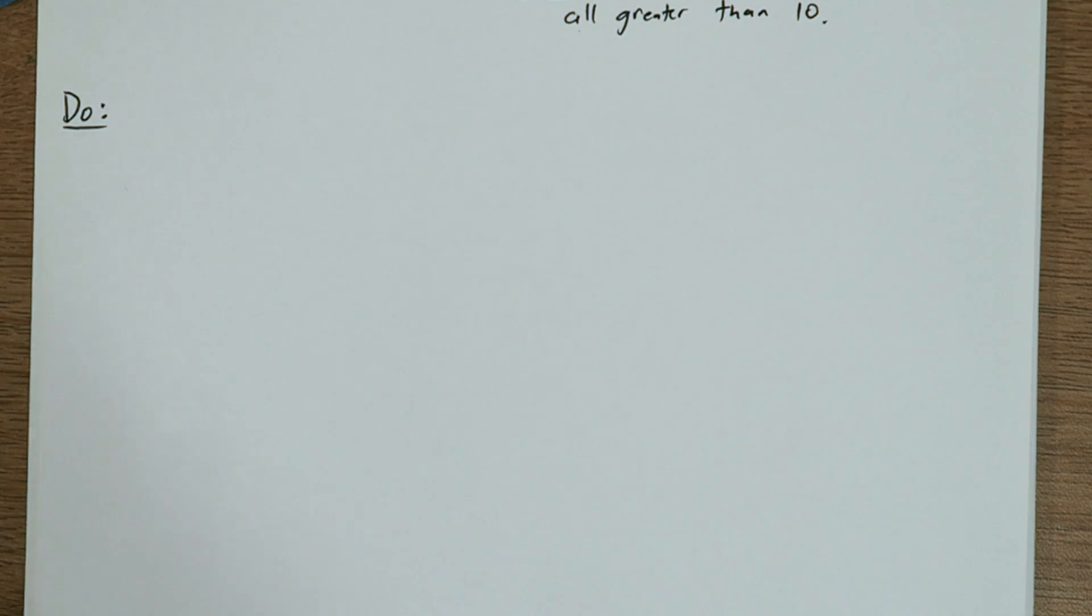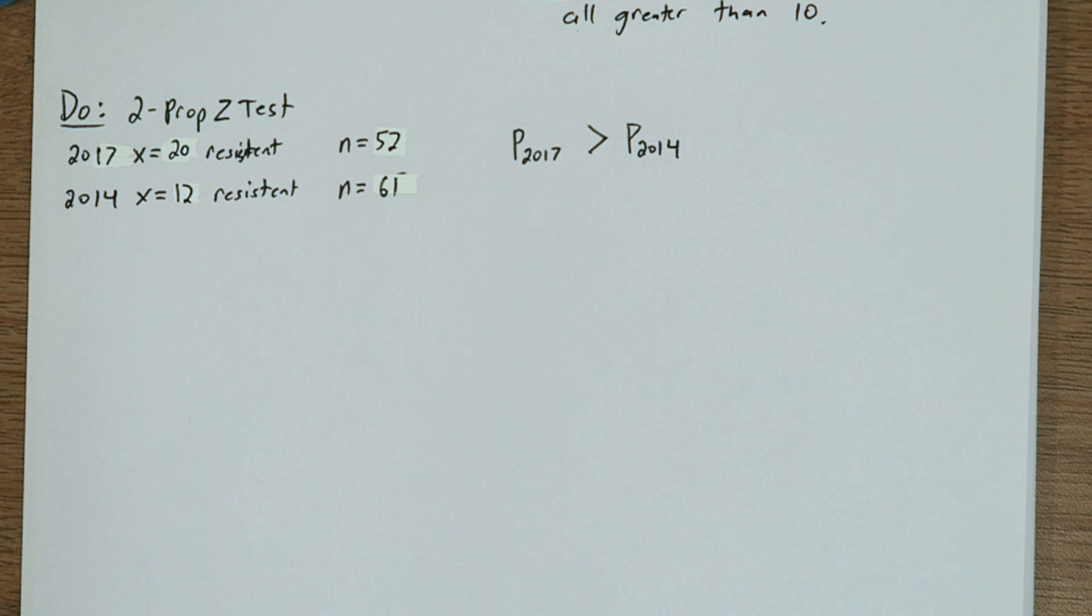In the do step, we'll use the two-prop Z-test function on the calculator. It will ask us how many successes we had in each group. A success in this case is a Cochia plant that's resistant. In 2017, we had 20 out of 52 resistant, and in 2014,